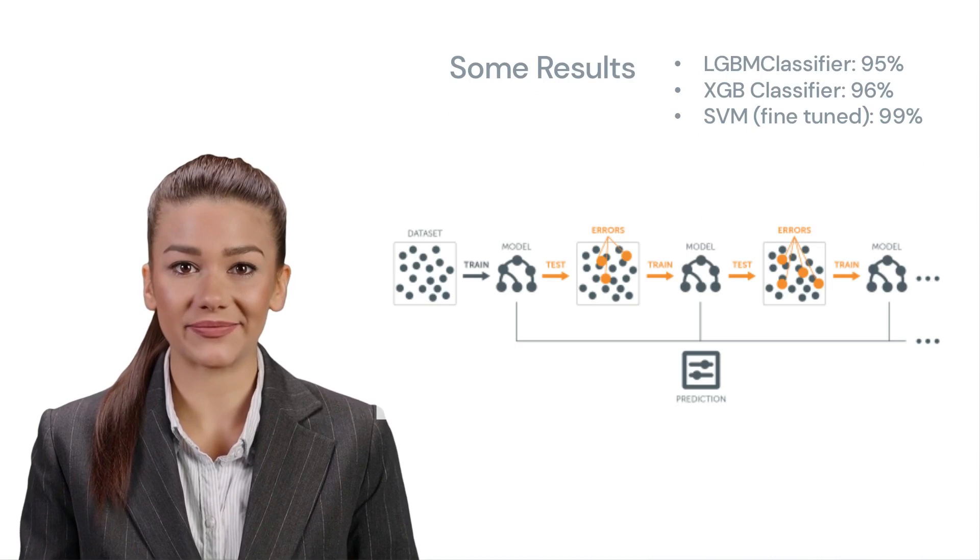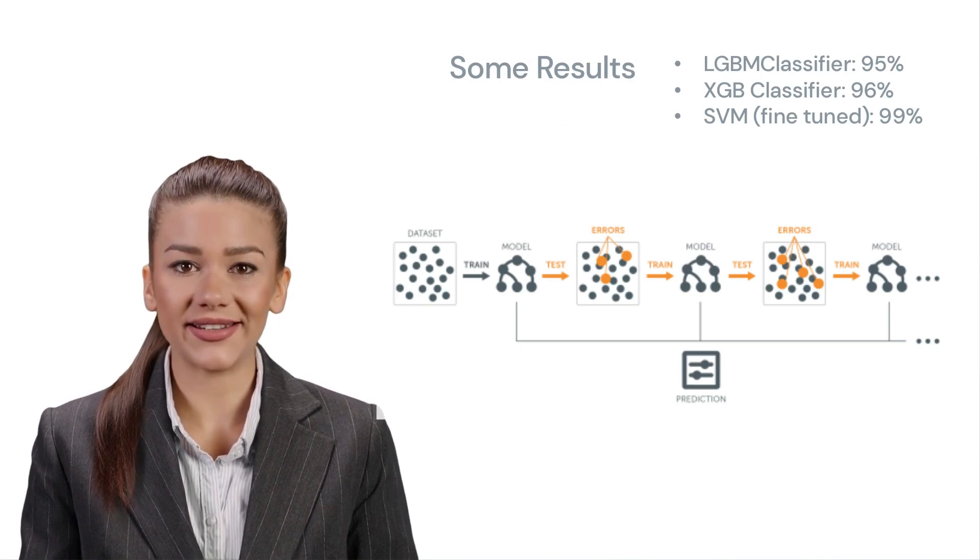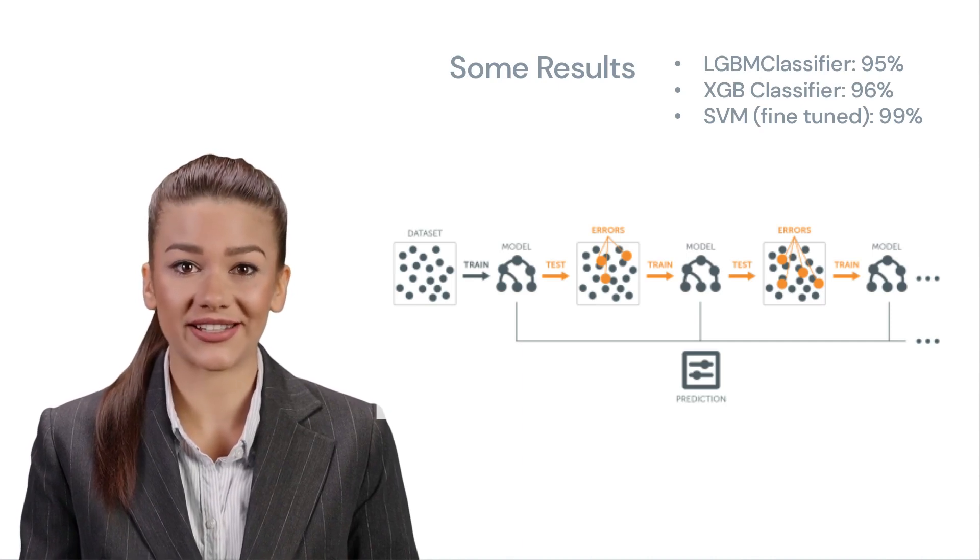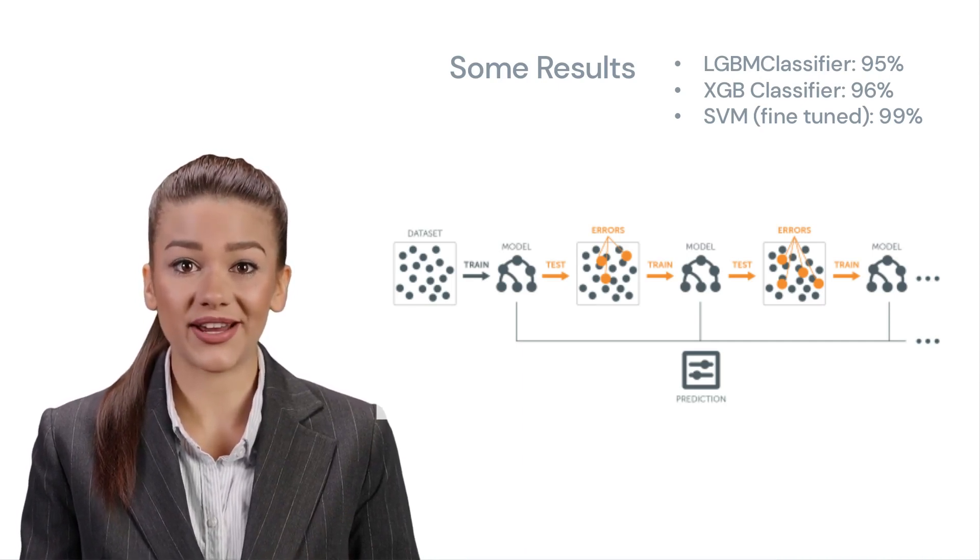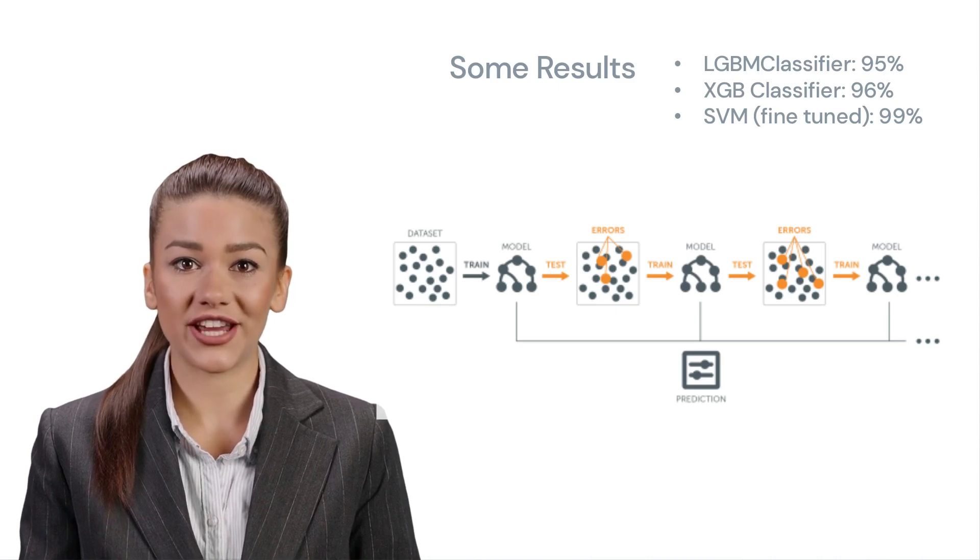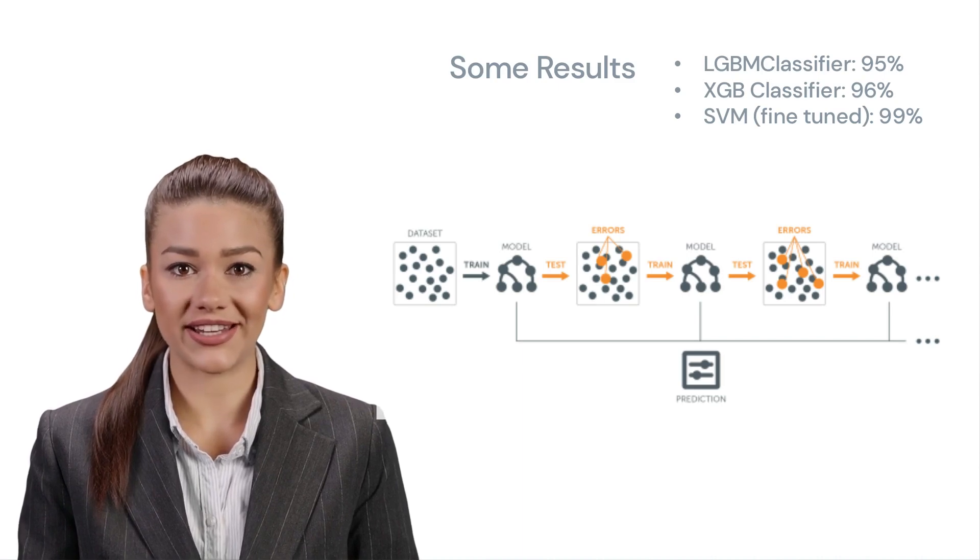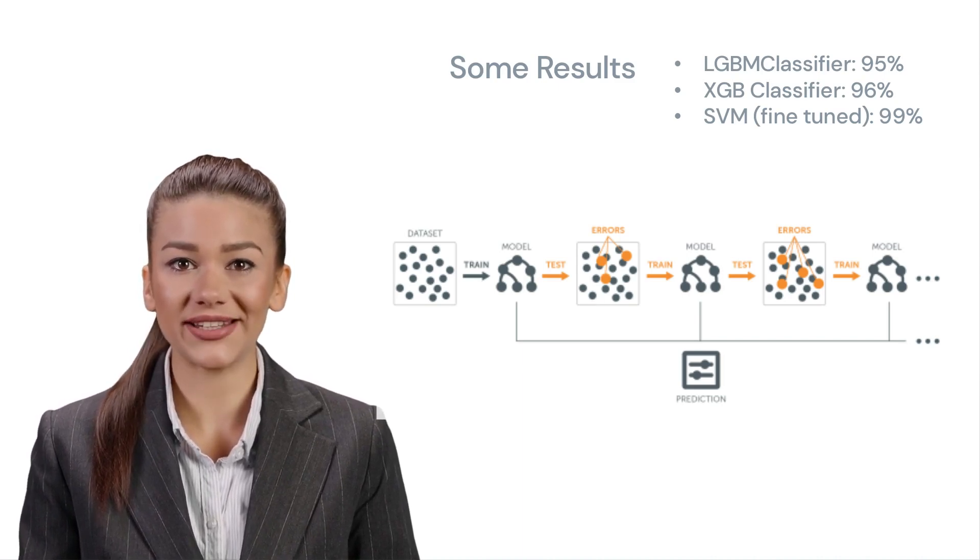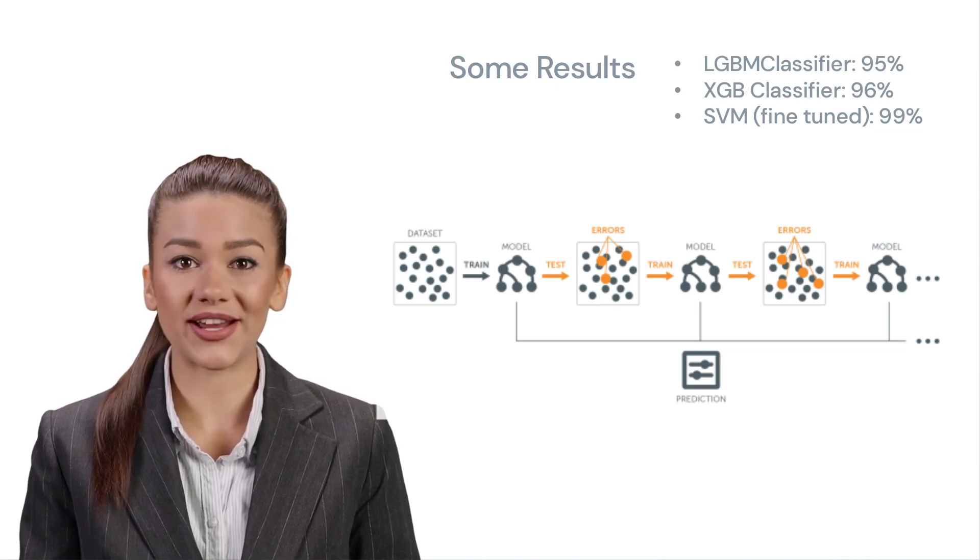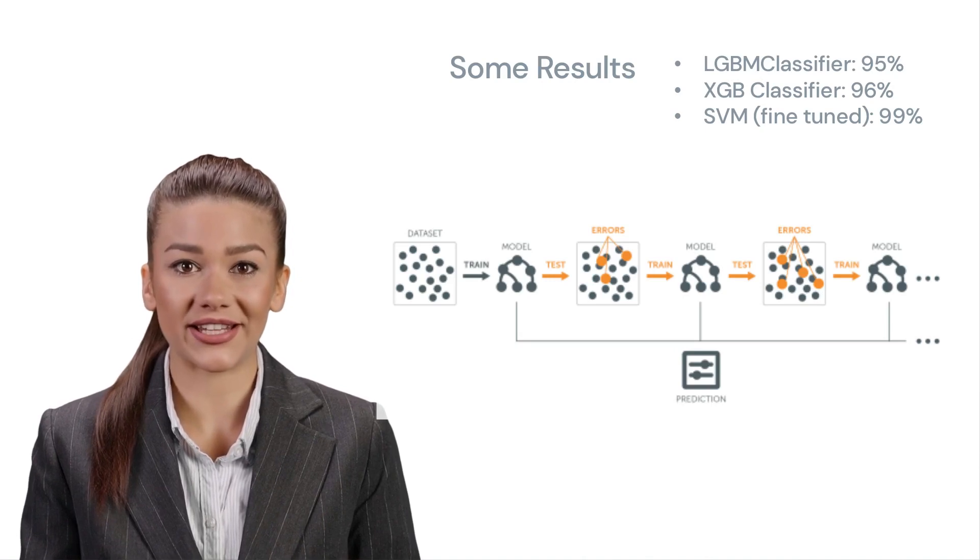What are gradient boosting machines? Imagine you're playing a game where you guess how many candies are in a jar. You make a guess, but it's not perfect. Then, a friend tries to guess based on your guess, but they also try to fix the mistakes you made. Another friend comes along and tries to guess, fixing the mistakes of both you and the first friend. This keeps happening, with each friend trying to correct the mistakes of the guesses before them. In the end, all the guesses combined make a really good guess. Gradient boosting machine is like that game. It's a way for computers to learn from data by making lots of guesses, one after the other, and fixing the mistakes of the previous guesses. By doing this, the computer gets really good at making predictions.